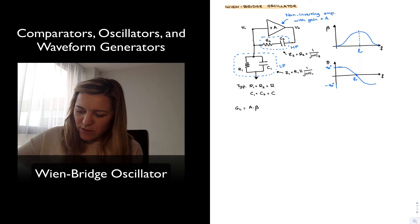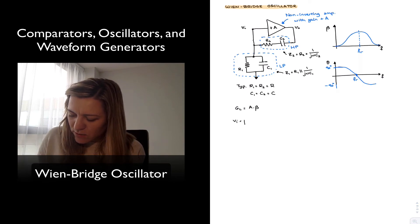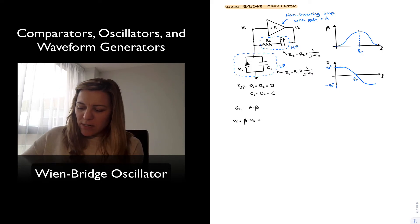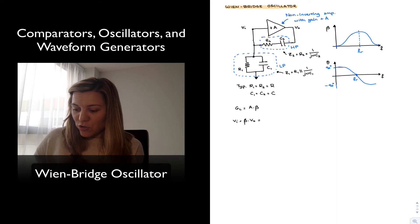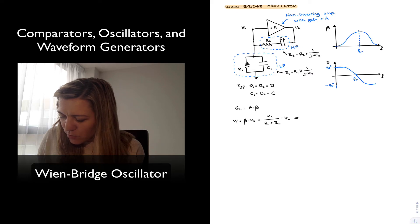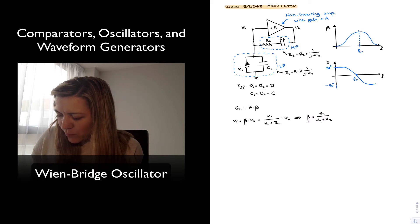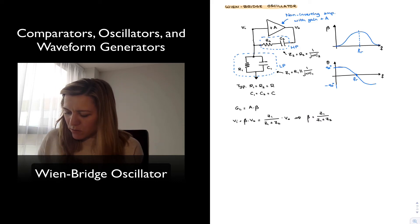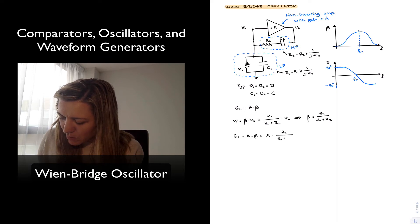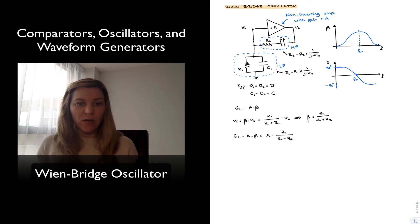Vin, which is the input of the circuit, is going to be equal to beta times Vout. Just by looking at the circuit, there is a voltage division going on, so beta equals Z1 divided by Z1 plus Z2. Therefore, the loop gain GL equals A times beta, which is equal to A times Z1 divided by Z1 plus Z2, where Z1 and Z2 are those series and parallel combinations.